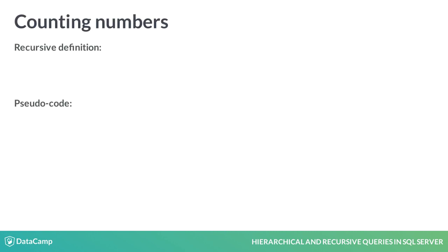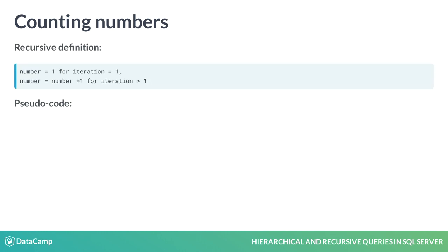The first problem is to count from 1 to the termination condition. This problem could be defined by the initialization of a number with 1 for the first iteration. For all following iterations, 1 is added to this number until the termination condition is met.